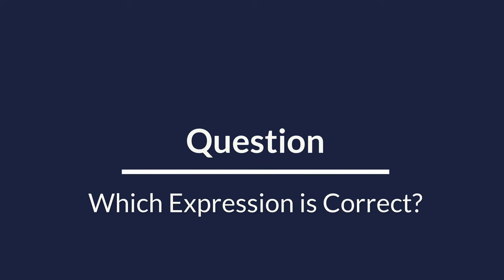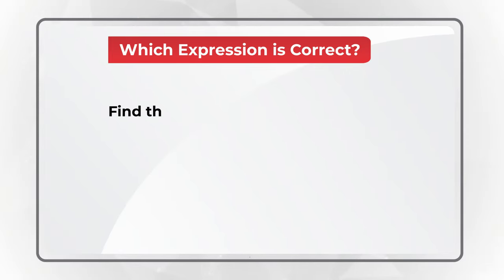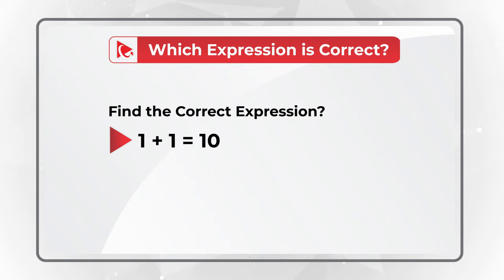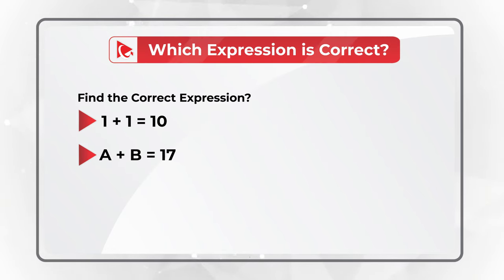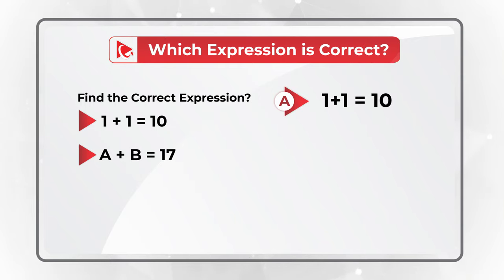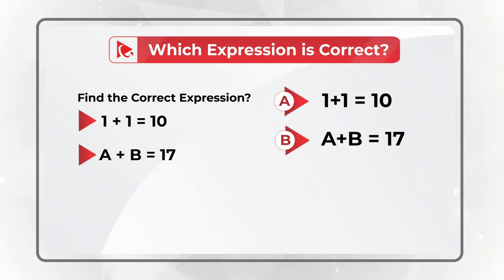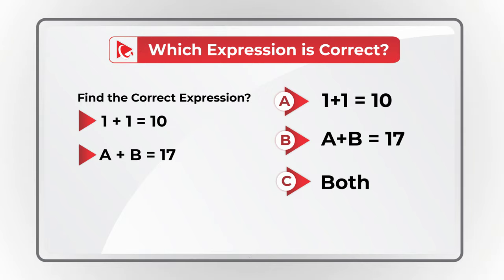Here's a very unusual question which is frequently used in a test. You need to find the correct expression and you're presented with choices: 1 plus 1 equals 10, and second choice, a plus b equals 17. You have four different options: choice A, 1 plus 1 equals 10 is correct; choice B, a plus b equals 17 is correct; choice C, both are correct; and choice D, none are correct.